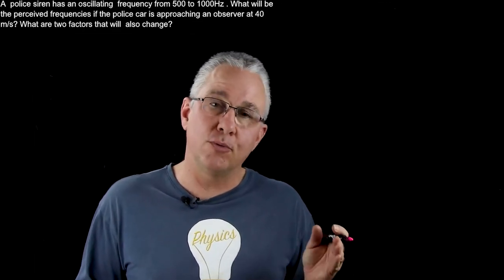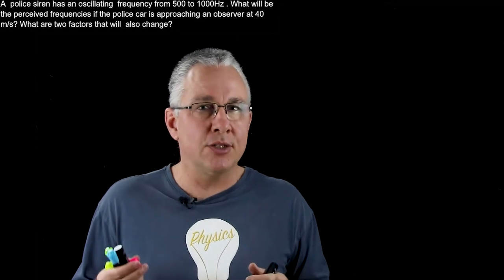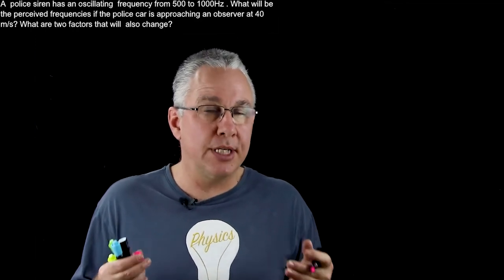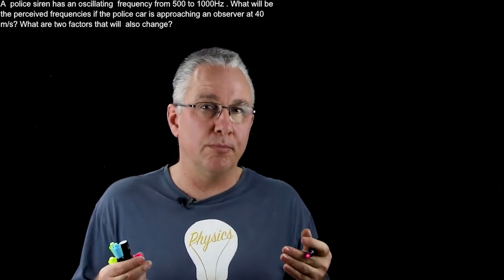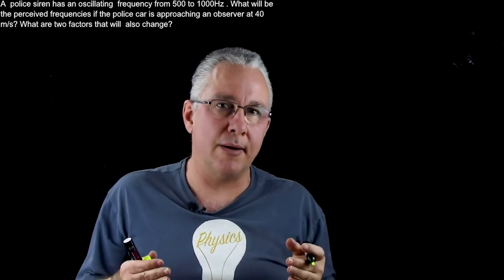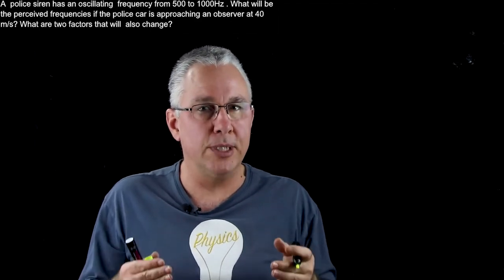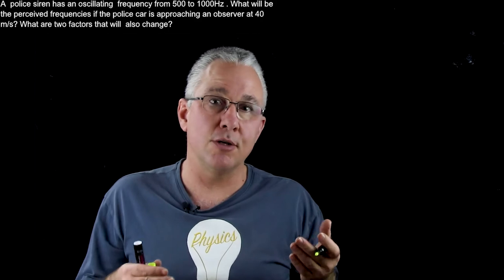This police siren has an alternating frequency of 500 Hz to 1000 Hz and we're asked to work out what is the perceived frequency that the observer will pick up. So this requires our understanding of the formula dealing with the Doppler shift, in terms of Doppler shift involving sound, mechanical waves.